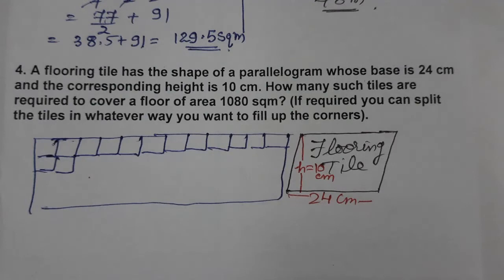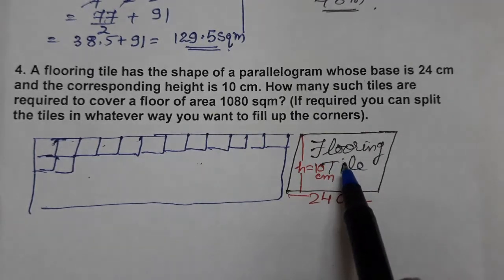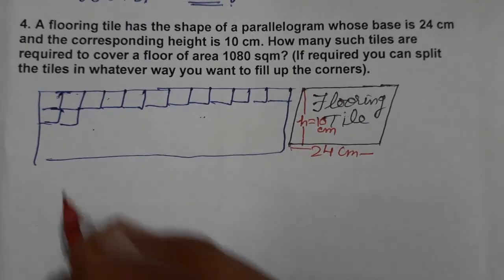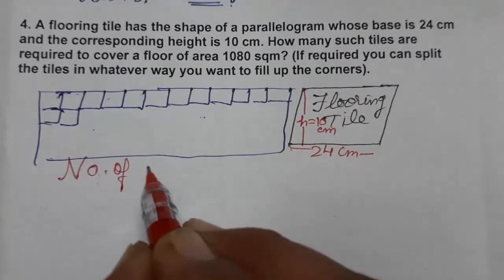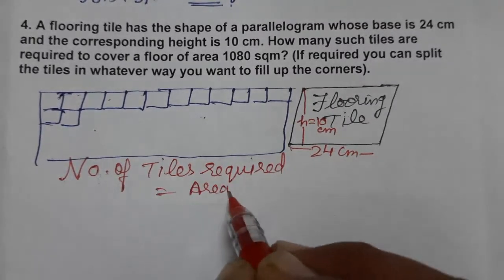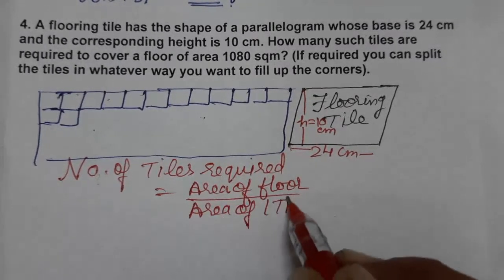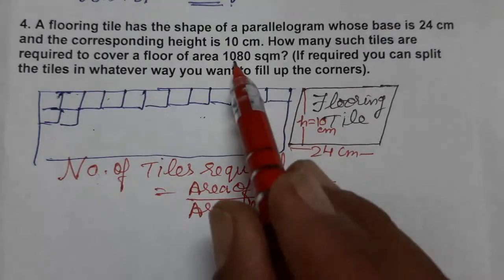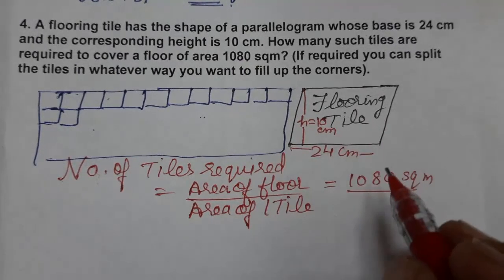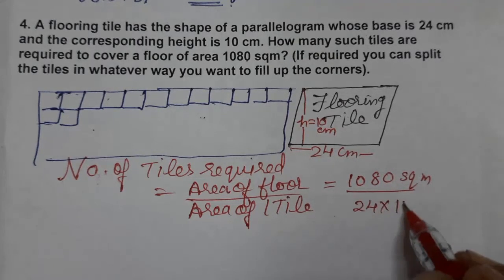The number of tiles required equals the area of the floor divided by the area of one tile. The floor area is 1080 square meters. The area of one tile is base times height. Base is 24 centimeters and height is 10 centimeters, so tile area is 24 × 10 = 240 square centimeters.